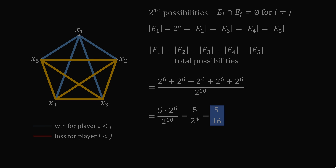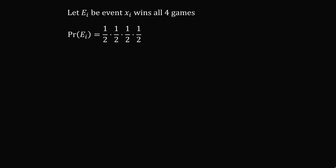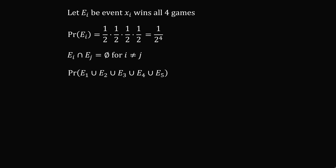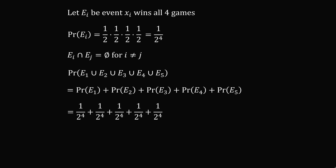So now let's do a shortcut and solve it in a quicker way. We'll use the same notation as before. The probability that some specific player wins all four games will be 1/2 times 1/2 times 1/2 times 1/2, because each of the four games has a probability of 1/2. So this is equal to 1 divided by 2 to the power of 4. As we argued before, ei and ej have an empty intersection, so we want the probability of the union of e1 to e5. Since the events are mutually exclusive, this will be the sum of the probabilities of each event. Each event has probability 1 over 2 to the power of 4, and this is true for 5 events. So this equals 5 divided by 2 to the power of 4, which is 5 over 16.